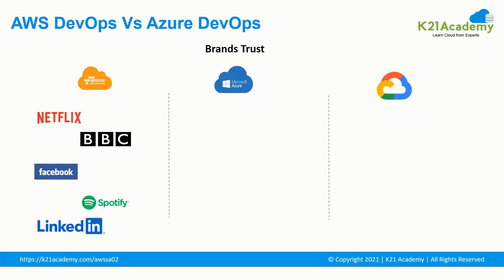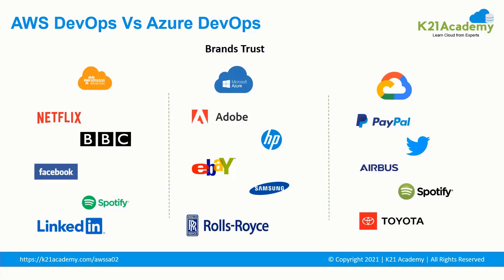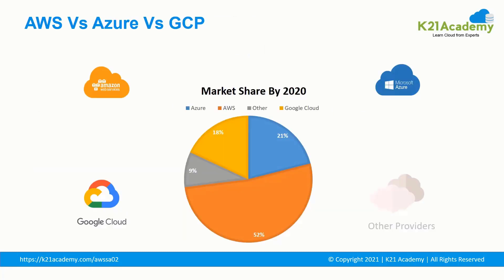Now let's look at brand trust. Netflix, BBC, Facebook, Spotify and LinkedIn are all using Amazon Web Service. Adobe, HP, eBay, Samsung and Rolls Royce are all using Microsoft Azure. PayPal, Twitter, Airbus, Spotify and Toyota are using Google Cloud Platform. According to market share data from 2020, Amazon Web Service has the maximum market share at 52%, followed by Azure in second place at 21%, then Google Cloud Platform in third, with others at 9%.